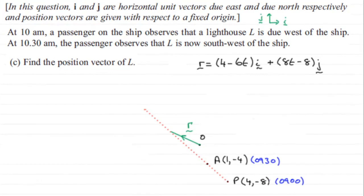Hi, now in this part of the question we're told that at 10 a.m. a passenger on the ship observes that a lighthouse L is due west of the ship. And at 10:30 a.m. the passenger observes that L is now southwest of the ship. And we've got to find the position vector of the lighthouse L.